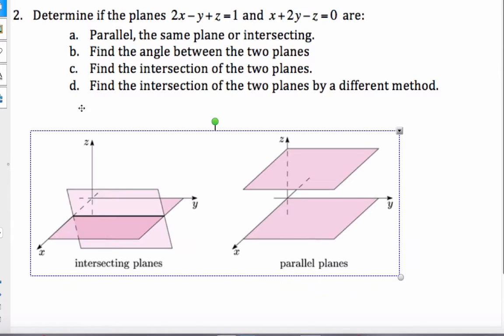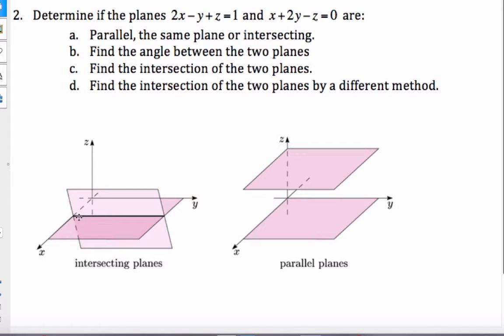What could happen is the planes could be intersecting and when they do they make a line as you can see here, or they could be parallel, or they could be the same plane which we call coincidence. If they're going to be parallel or the same plane, that means this normal vector would have to be a scalar multiple of this normal vector.